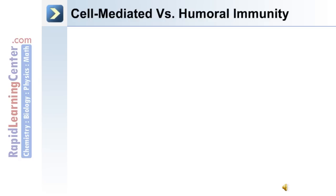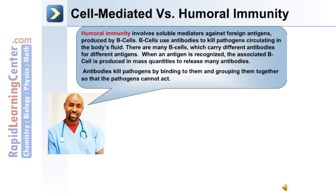Lymphocytes are involved in immune responses against foreign antigens or virally infected cells, and these responses can be divided into cell-mediated and humoral immunity. Humoral immunity involves soluble mediators against foreign antigens produced by B cells. B cells use antibodies to kill pathogens circulating in the body's fluids. There are many B cells carrying different antibodies for different antigens. When an antigen is recognized, the associated B cell is produced in mass quantities to release many antibodies.